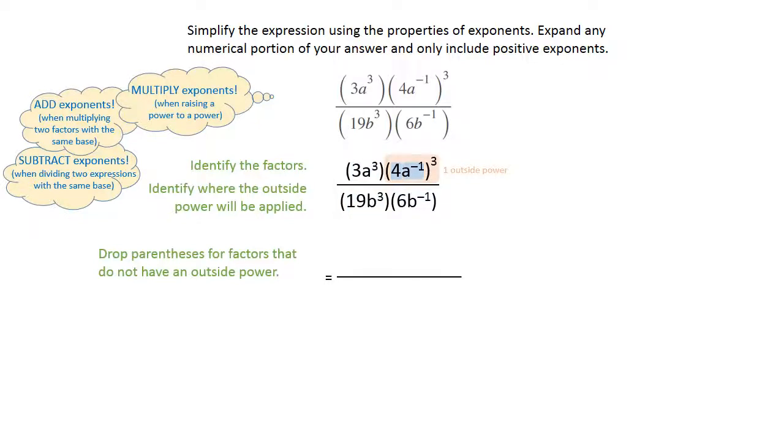Everything without the outside power, we're just going to write it. You've got your 3 and your a to the third on the top, and 19 and b to the third. Then just go ahead and multiply that 6 and the b to the negative one. So we just broke everything apart, and now we've got six factors in front of us.